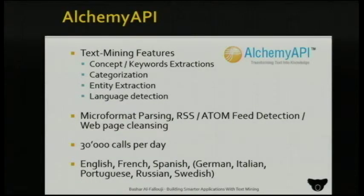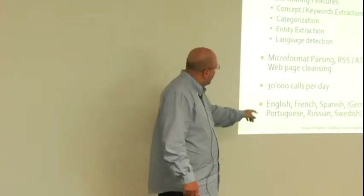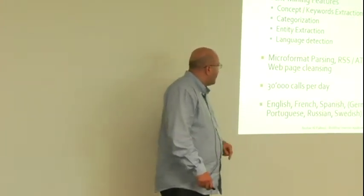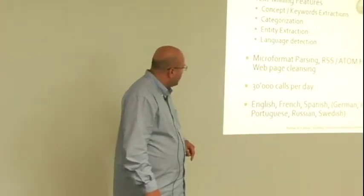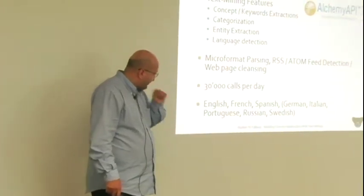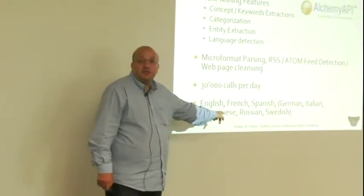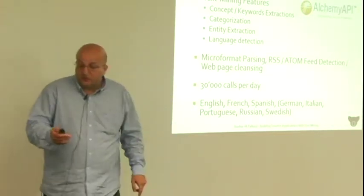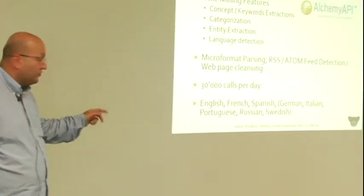There are other players. Alchemy API is one — probably the second biggest after Open Calais. They offer concept extraction, categorization, language detection, and microformat parsing. They are a bit more restricted in terms of how many calls you can do per day, but they support more languages. So if you have to deal with languages beyond English and French, you can use them.